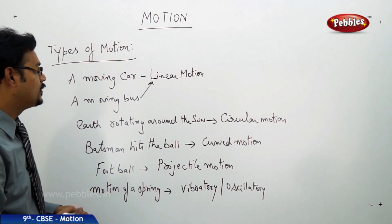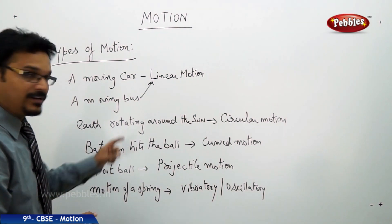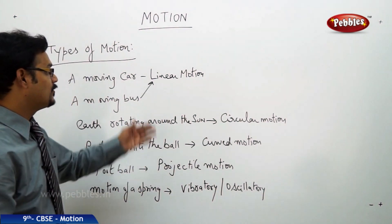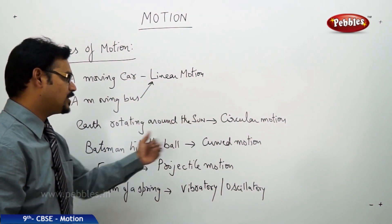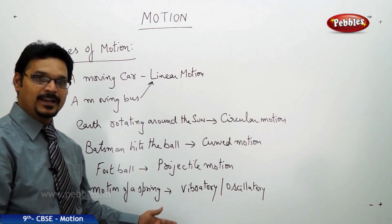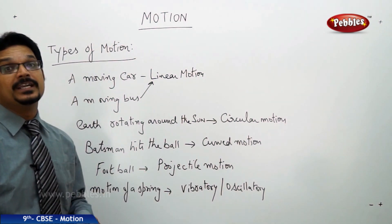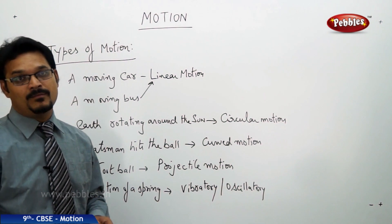So once you check all these examples, you get to know that we are not having one type of motion. We have linear motion, circular motion, curved motion, projectile motion, vibratory or oscillatory motions, etc., different types of motions we have.